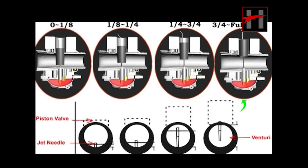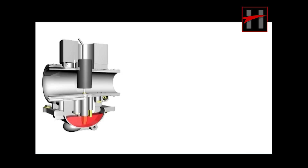Classified on the basis of throttle valve, there are two types of carburetors: one, the piston type throttle valve carburetor, and two, the butterfly slide type carburetor.